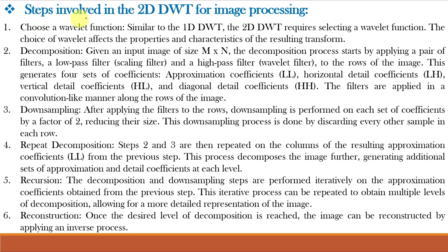Now these are the steps involved in 2D DWT for image processing. Same as 1D DWT, we choose a Wavelet function — the choice of Wavelet affects the properties and characteristics of the resulting transform. For an image of size M×N, the decomposition process starts by applying a pair of filters: a low-pass filter (scaling filter) and a high-pass filter (Wavelet filter) to the rows of the image. This generates 4 sets of coefficients: the LL, LH, HL, and HH coefficients, applied in a convolution-like manner along the rows. After applying the filters to the rows, downsampling is performed on each coefficient by a factor of 2, reducing their size.